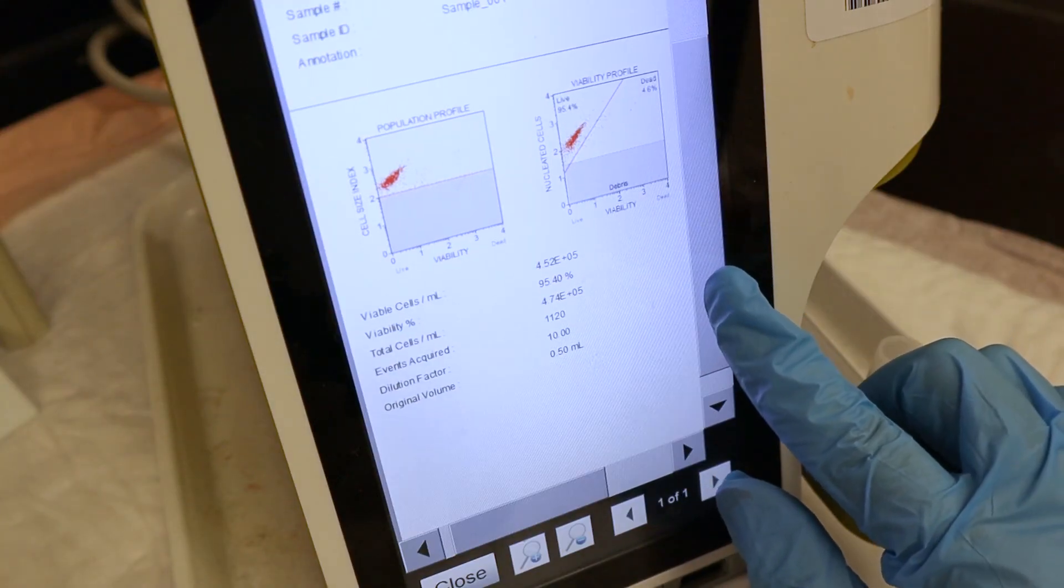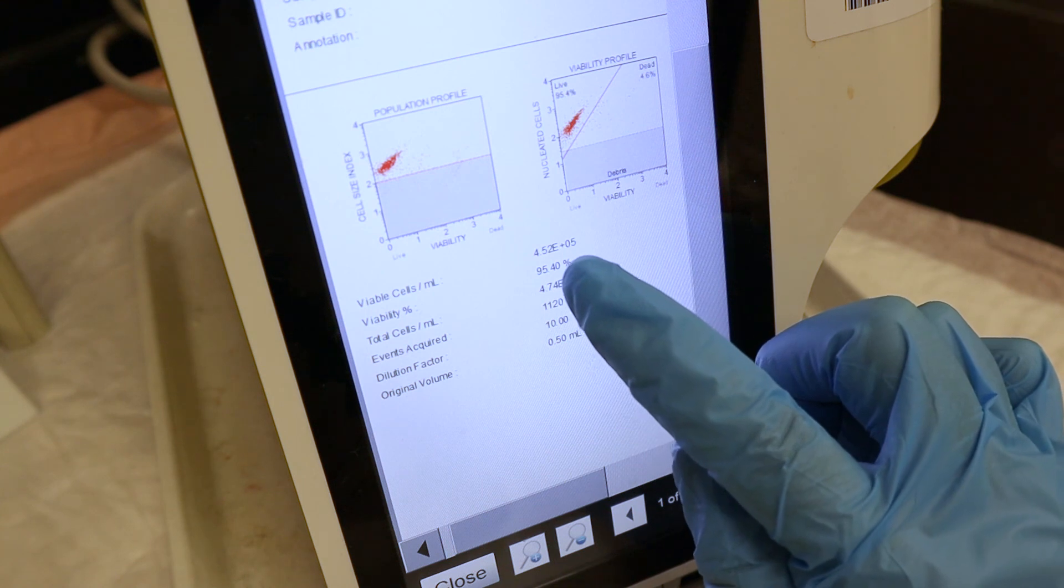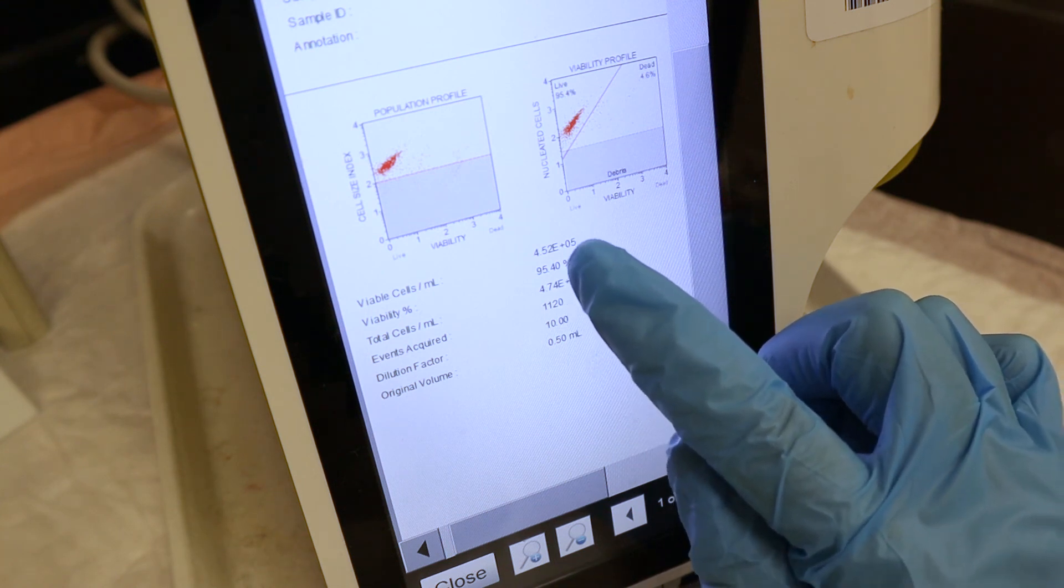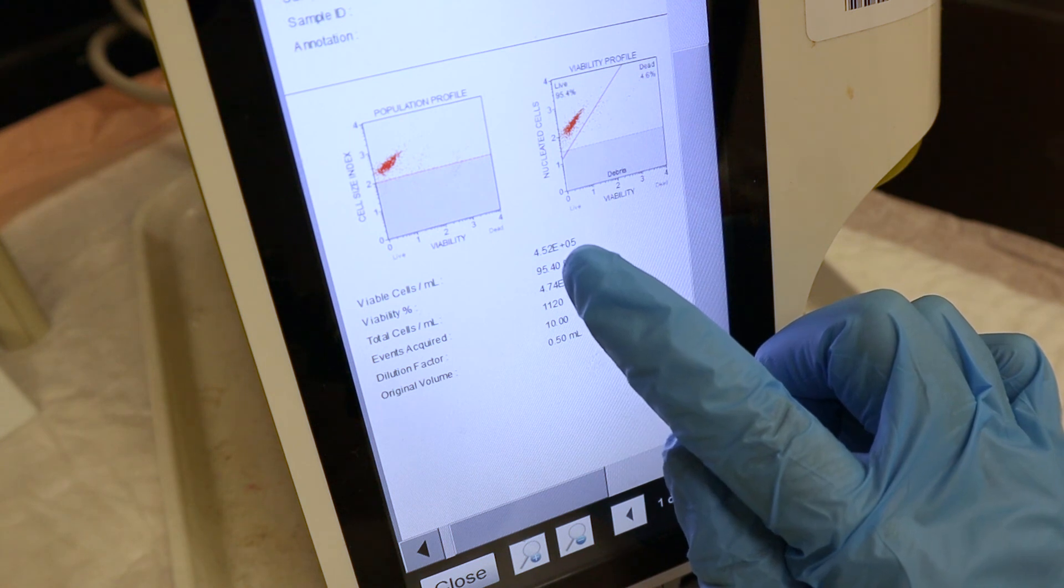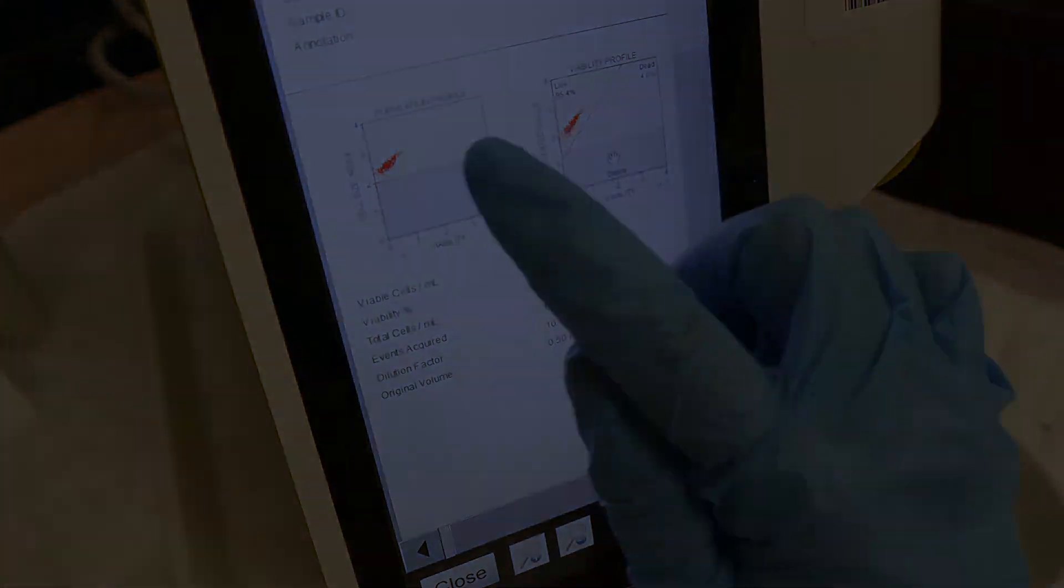After completing the viability checks, you can review your data using the print preview function. You can also export your data to a USB device. Compared to using a hemocytometer, flow cytometry is here to make your life easier. Until next time!